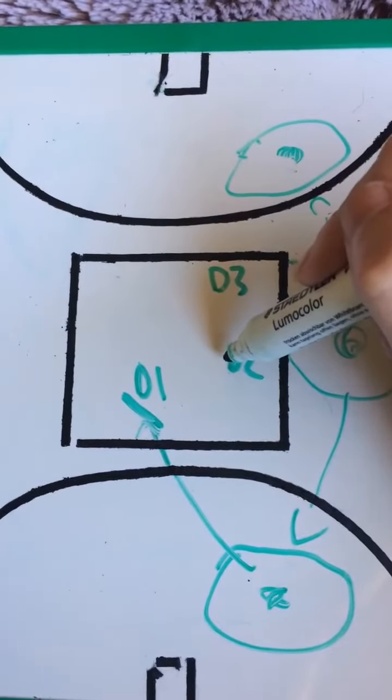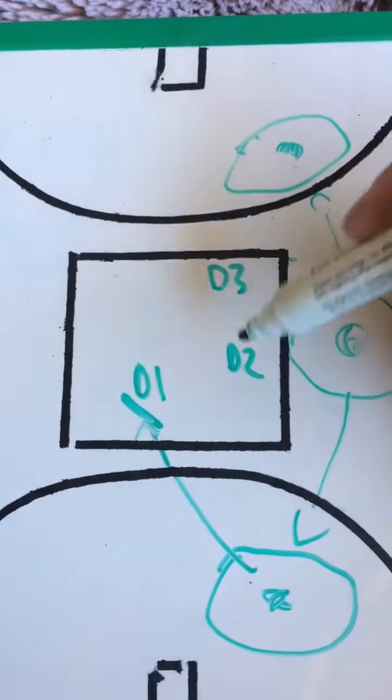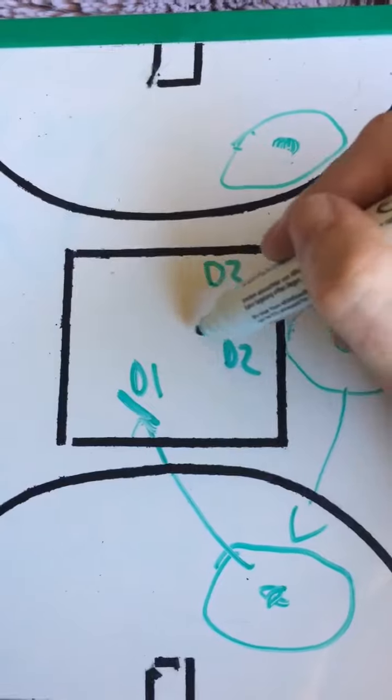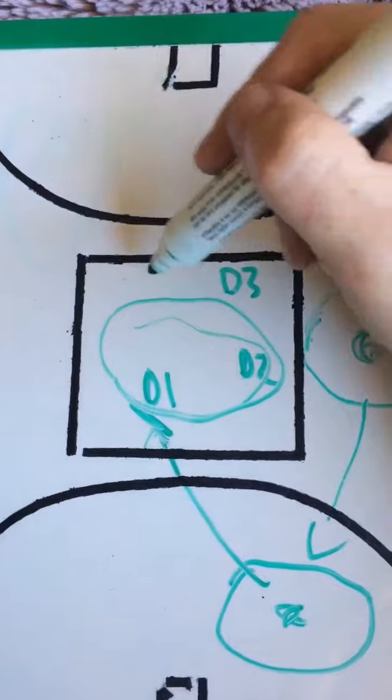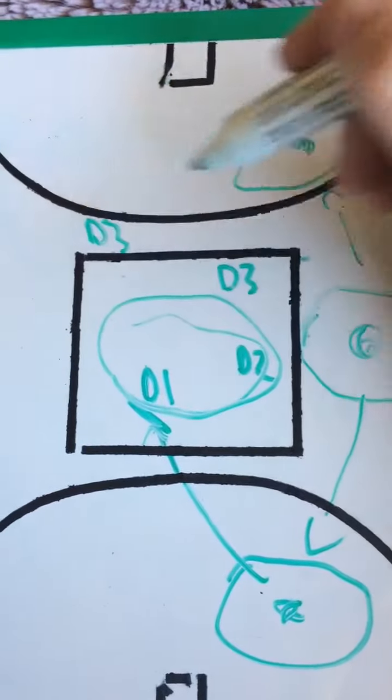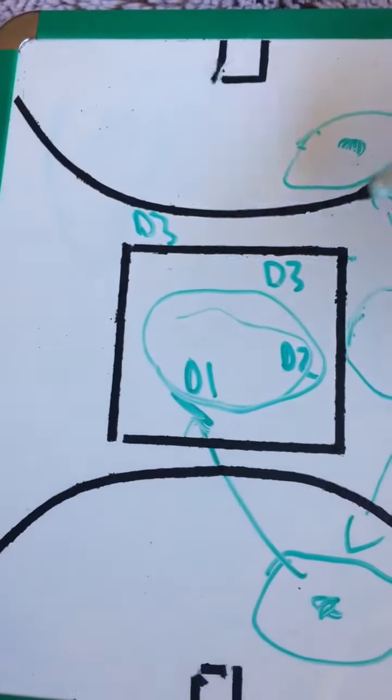So this player D2, if it's a mark and D2 has picked up the next dangerous player in this area here, D3 will cut off the most dangerous space, which is probably about here for this lateral lead from the forwards.